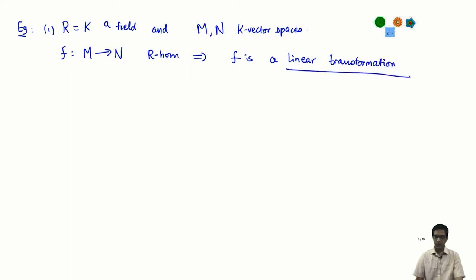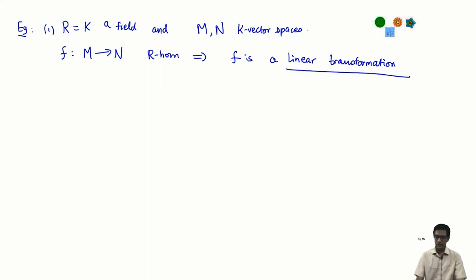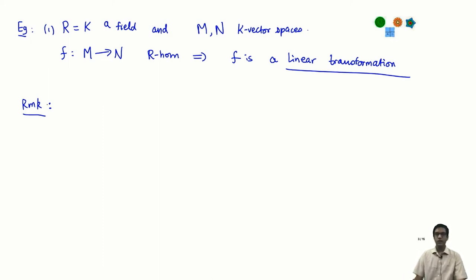It is just that familiar notion imported to the context of modules over anything. That is the first example. A quick remark: all of this was defined for left modules, but it is not surprising how one defines homomorphisms for right modules — you just demand that it preserves the scalar multiplication on the right.